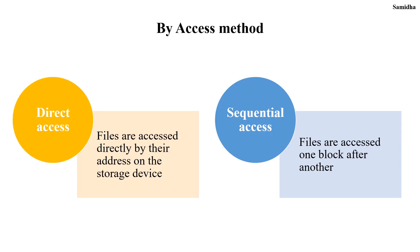Next is categorization based on access method. When information in a file is accessed, there are two ways: direct access and sequential access. In direct access, files are accessed directly. In sequential access, files are accessed in order, one after another. For example, if a needed record is in the 10th block, sequential access traverses all blocks from the first to the 10th, whereas direct access goes directly to the 10th block.